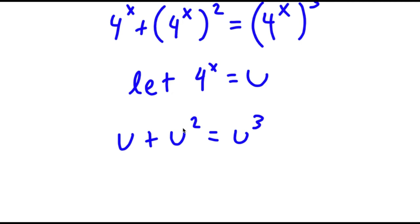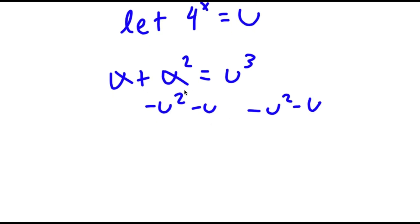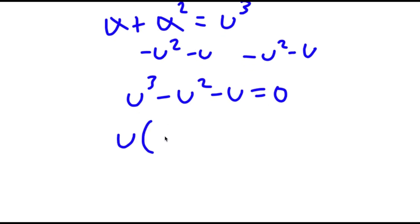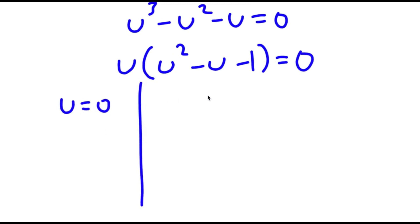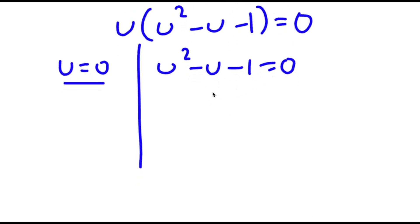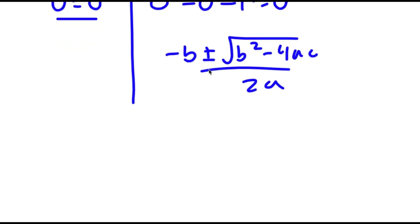To solve this, I'm going to start by subtracting u squared and u on both sides. So then these two cancel out and I have u cubed minus u squared minus u is equal to 0. I can factor out u, so I have u times (u squared minus u minus 1) is equal to 0. This gives u equals 0, and u squared minus u minus 1 equals 0. For the quadratic, we use the quadratic formula: negative b plus or minus the square root of b squared minus 4ac over 2a. You should end up getting u equals 1 plus the square root of 5 over 2.